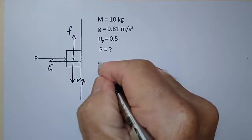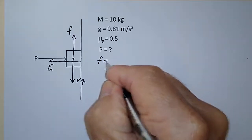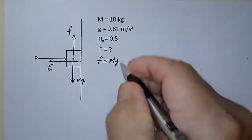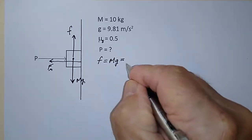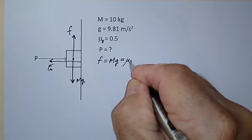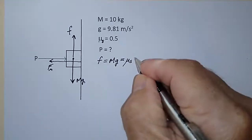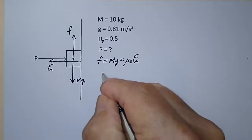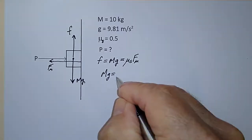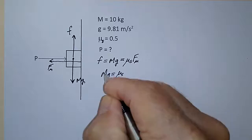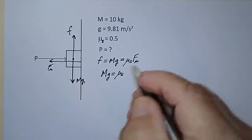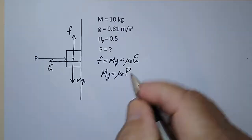In order for this thing to be in static equilibrium, F, the frictional force, has to be equal to the weight mg. And the frictional force is equal to coefficient of static friction times the normal force, or mg equals mu sub s times the normal force, but that's equal to P.